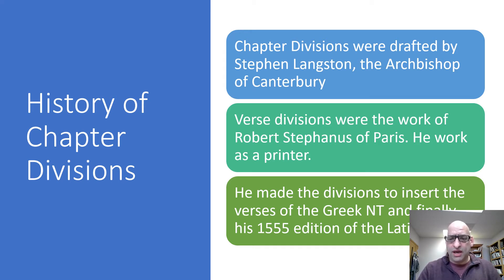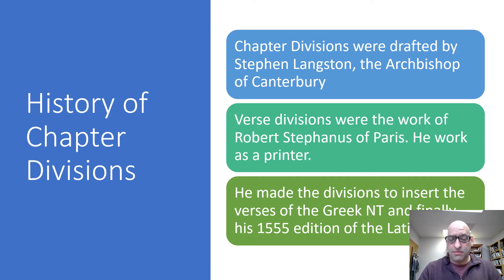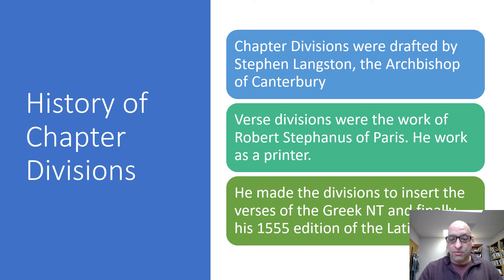Chapter divisions were drafted by Stephen Langton, Archbishop of Canterbury. Later, it was Robert Stephanus of Paris who began to actually put divisions around the biblical texts, whether Old or into the New. By the time his 1555 edition came out, we actually began to see those first divisions being applied within our English text.